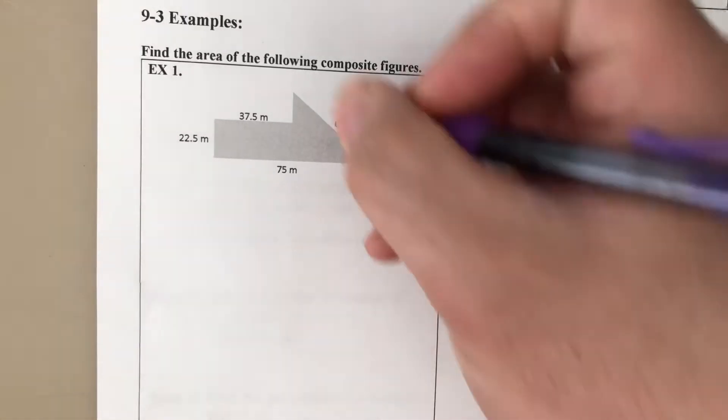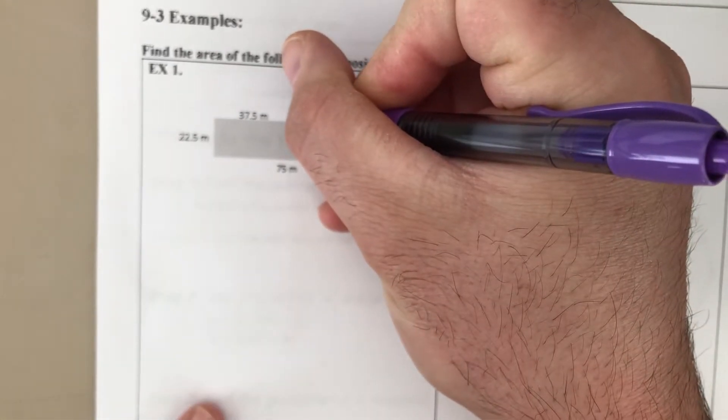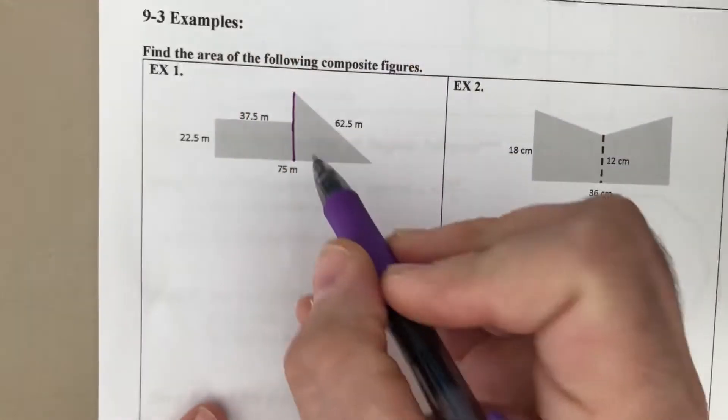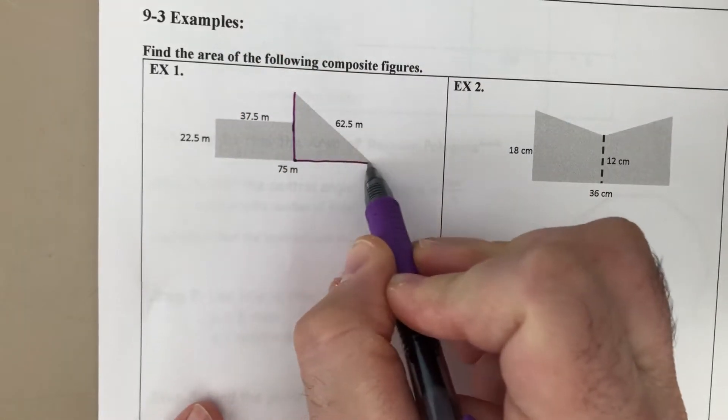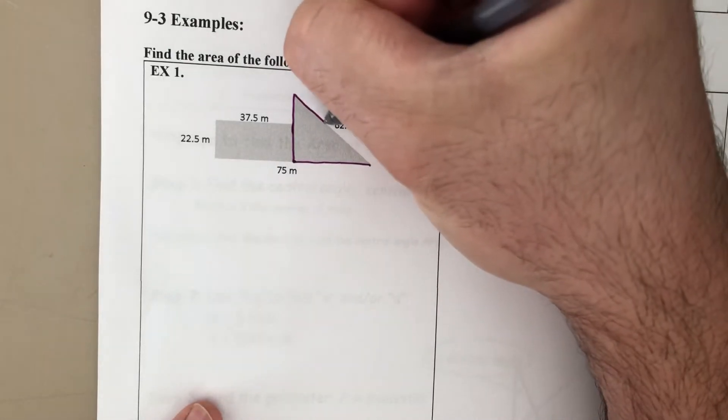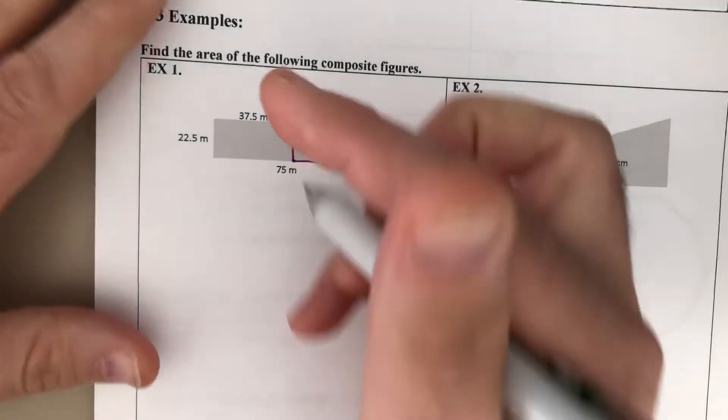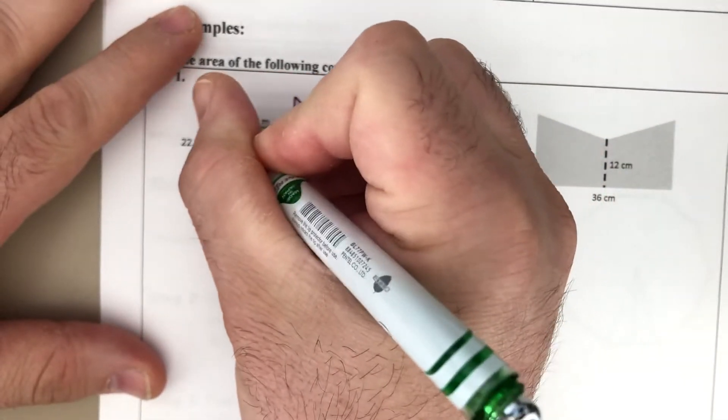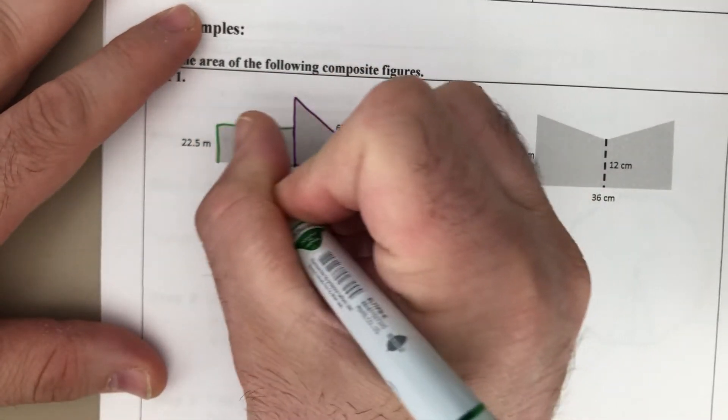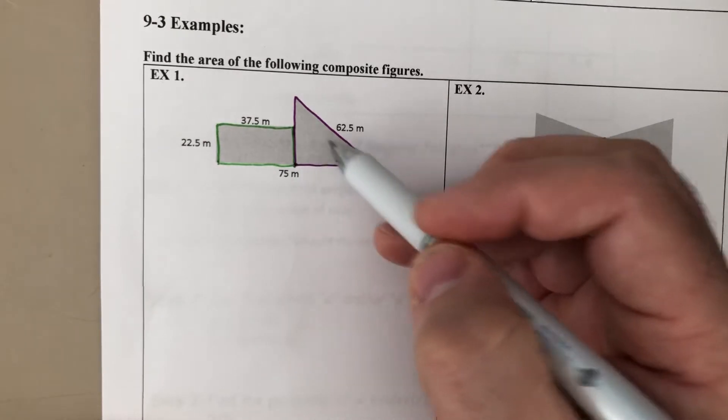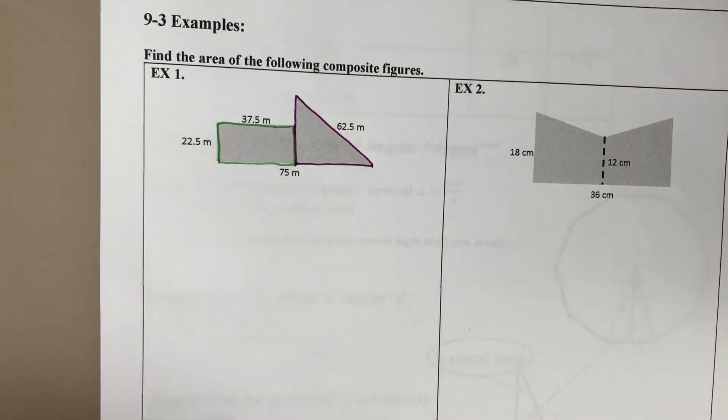And so what I see, if I were to continue this drawing, this line down right there, I see this triangle. And then I also see right on the other side a rectangle. And so the total area is going to be the area of this rectangle plus the area of this triangle.